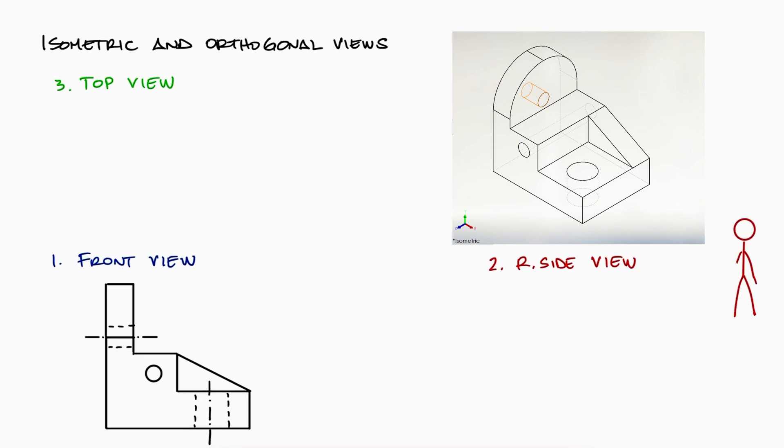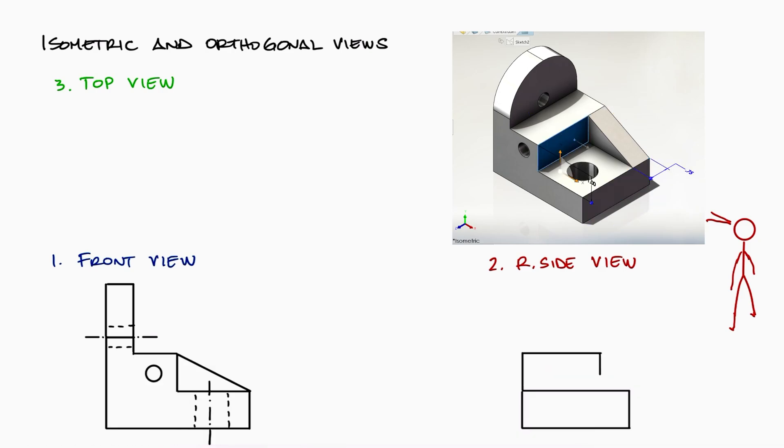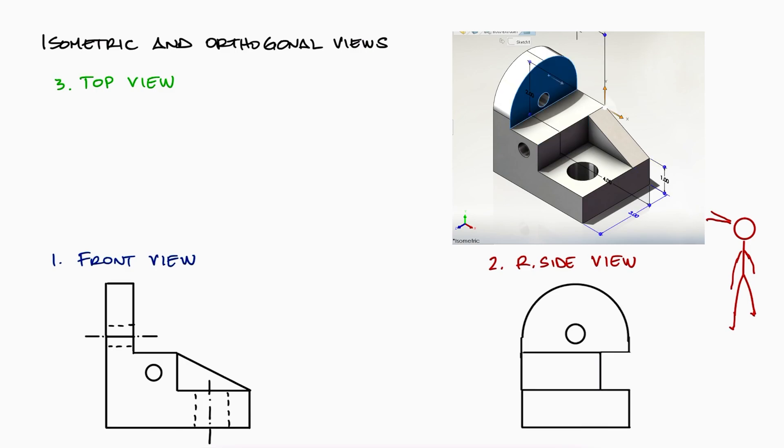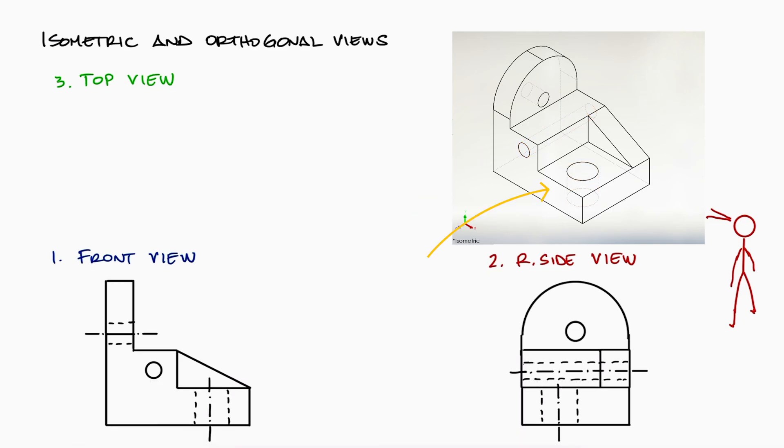If we do the same with a person looking at our part from the right side, this person would see one rectangle at the bottom, a more narrow rectangle just on top of that, the curved surface with the hole on top of those, and from that perspective, the slanted surface would look like another rectangle. If the object was transparent again, they would also see the outline of the horizontal hole and the outline of the vertical hole, shown as hidden features in dashed lines.